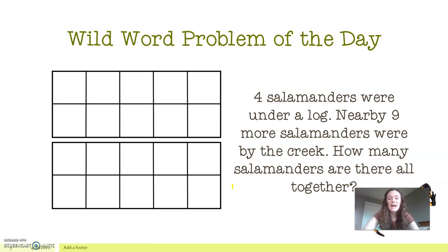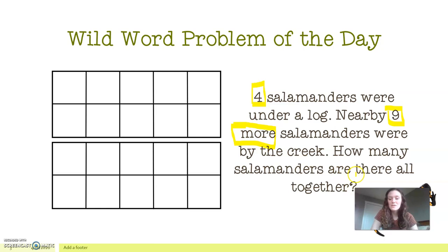We know that we are starting with four salamanders. It's good to highlight important information. We start with four salamanders and it says nearby there were nine — the key word here is 'more.' Nine more salamanders were by the creek. How many salamanders are there all together? In past episodes we've talked about our magic math words. 'All together' gives us a big hint to what kind of problem this is — it's asking us to combine two groups of objects together.